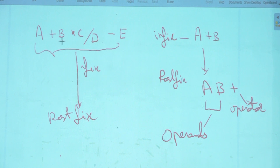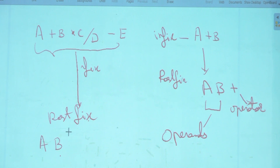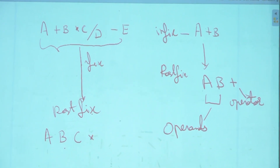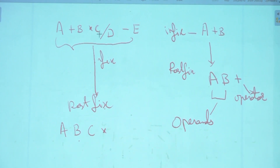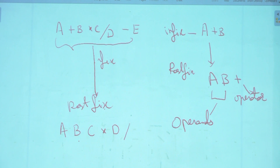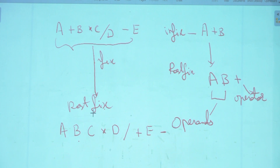Can you guess what the postfix version of this expression would be? When you convert a bigger expression, you have to take precedence into account. So for A+B*C/D-E, the postfix would be: A, B, C, star, D, slash, plus, E, minus. The star comes first because it has higher precedence, then slash, then plus, then minus.